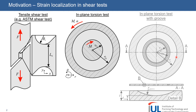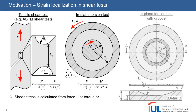The evaluation of all shear tests is nearly the same. For all shear tests the shear stress is calculated from the measured force F or torque M and the local cross section A in the shear area, which depends on the local position on the specimen. The local strain is often measured using digital image correlation systems, or short DIC, but using DIC systems the exact measurement of shear strain is a challenge as I will show you in the following.